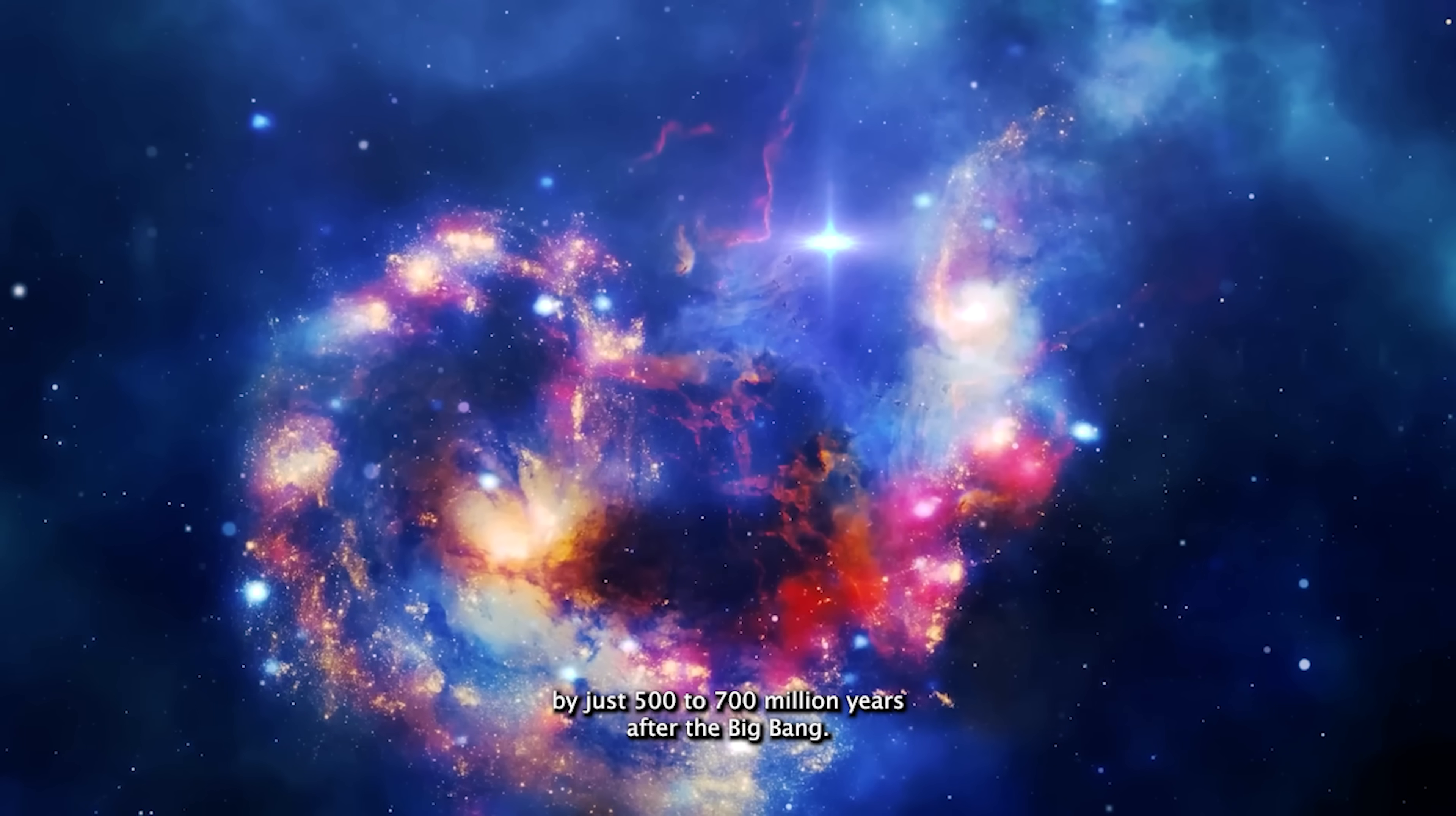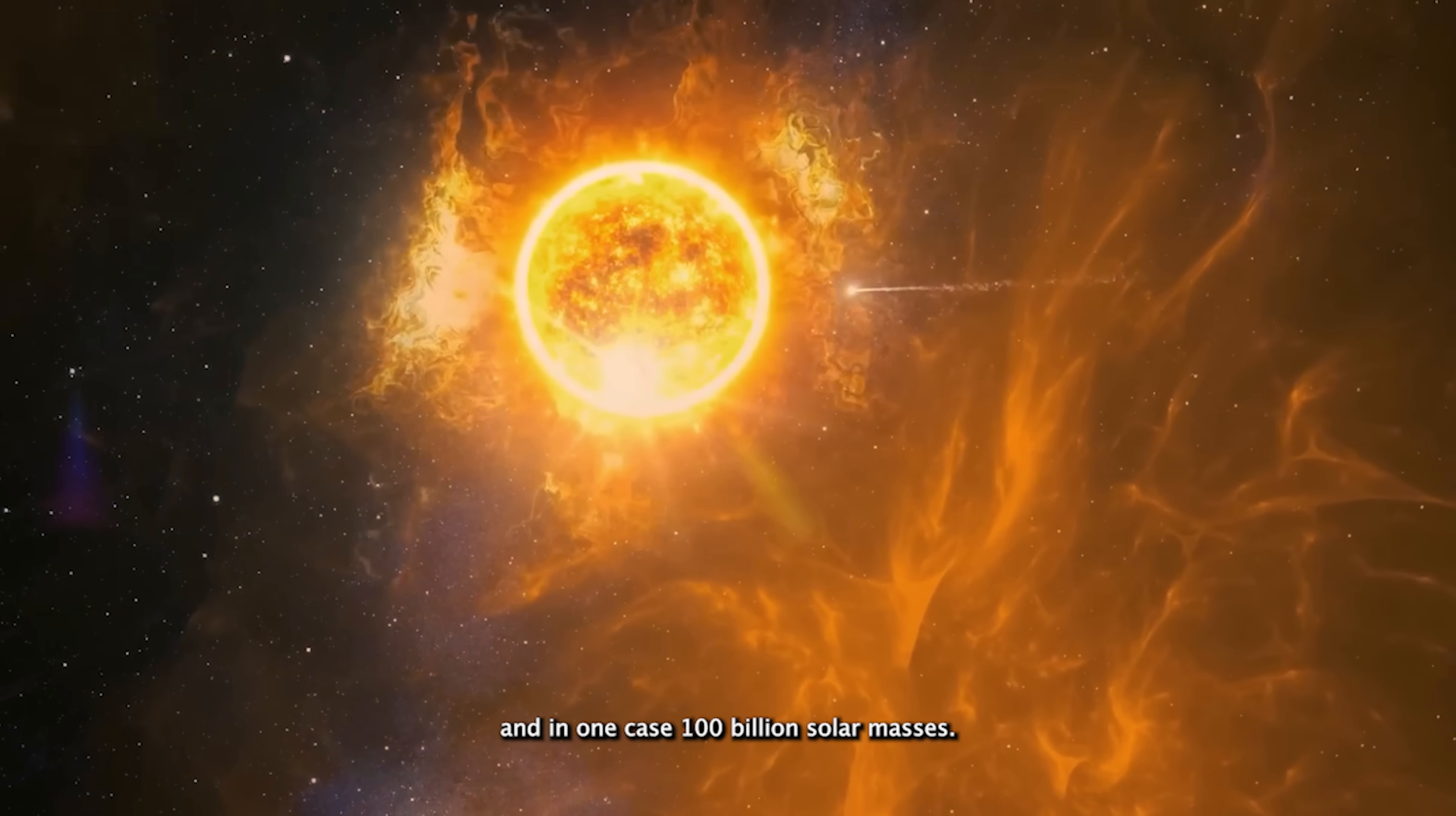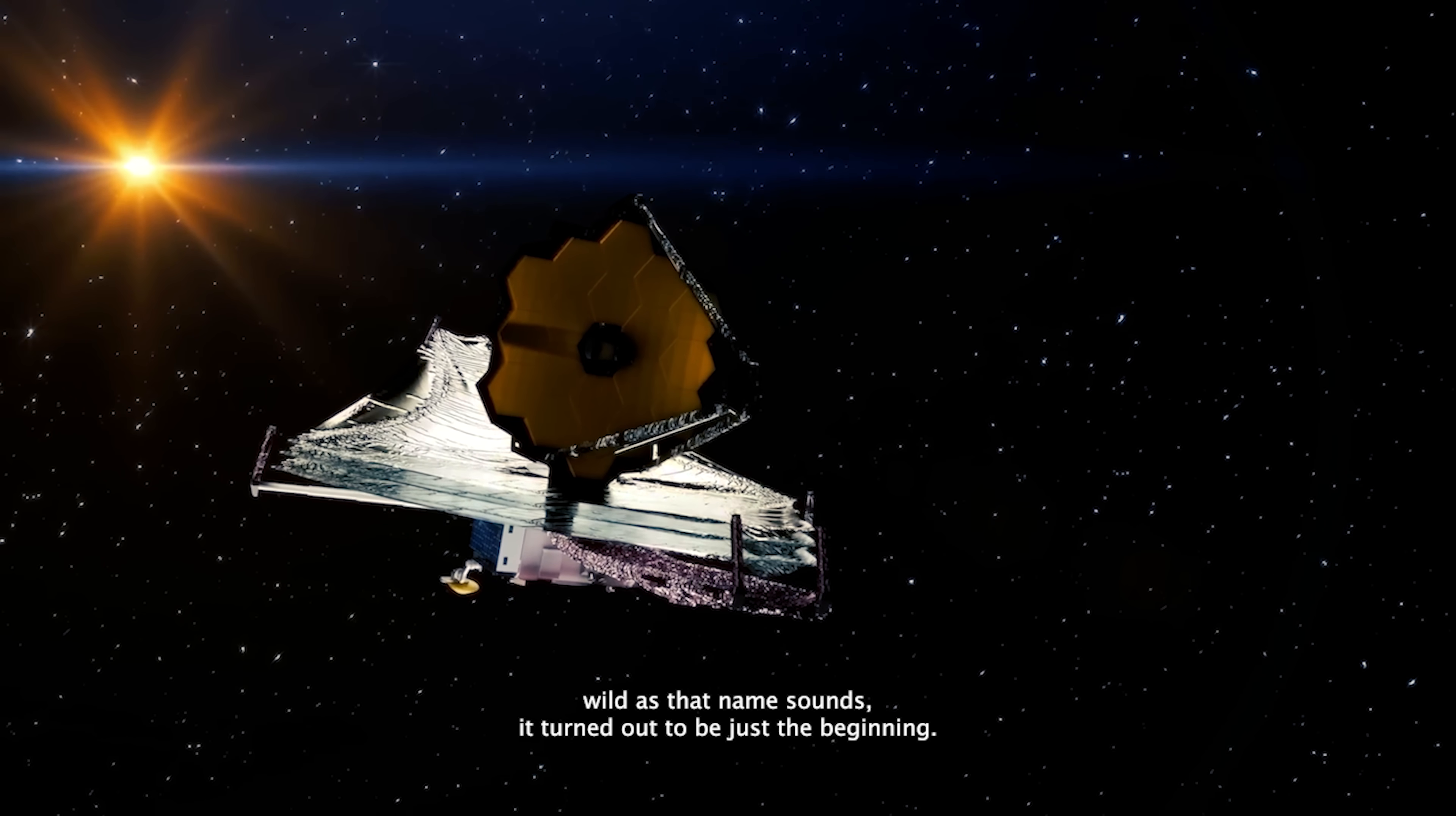By just 500 to 700 million years after the Big Bang, there were at least six massive galaxies, each containing about 10 billion—and in one case, 100 billion—solar masses. The structures Webb uncovered quickly earned a new nickname among astronomers: universe breakers. And as wild as that name sounds, it turned out to be just the beginning.